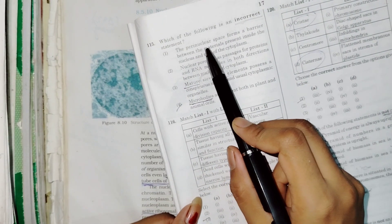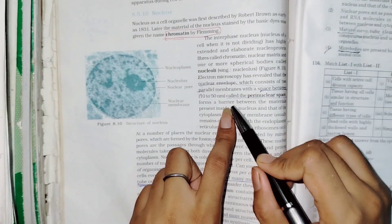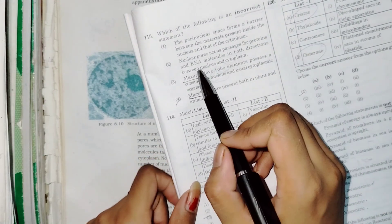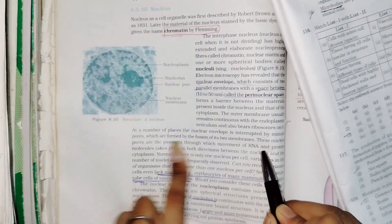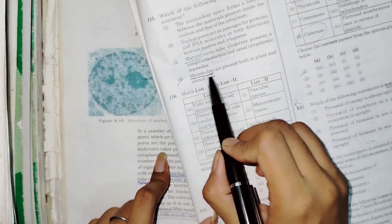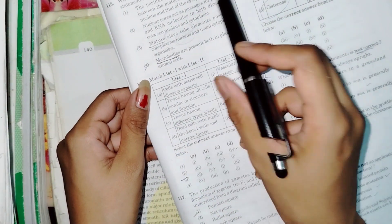Incorrect statement: perinuclear space forms barrier between the materials. Nuclear pores act as passive for protein and RNA. Nuclear pores are the passages through which movement of RNA and protein molecules take place. Microbodies are present both in plants and animal cells. Microbodies are present in both plants and animals. This statement is not given, that's why this is incorrect.